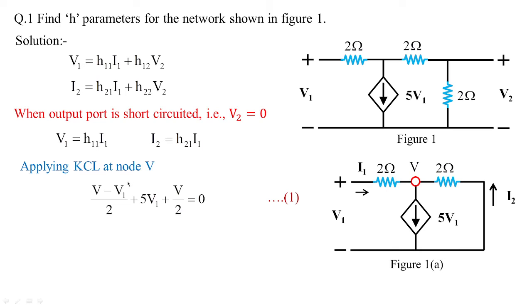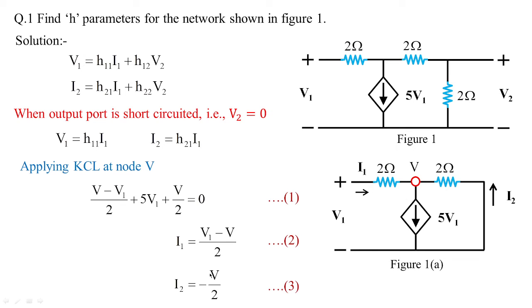This KCL equation has been employed at node v to frame equation 1. We also need the branch current i1: since i1 flows from v1 to v, equation 2 gives i1 = (v1 − v)/2. And as already discussed, equation 3 gives i2 = −v/2. These are the three important equations framed by observing KCL at figure 1a.